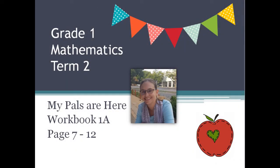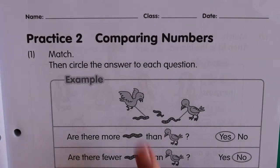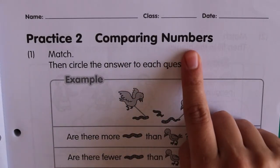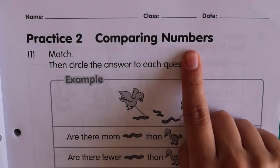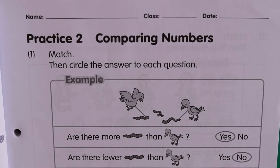We are in our Workbook 1A, carrying on with page 7: comparing numbers. Comparing numbers means looking at the differences — whether they are bigger or smaller. We compare the numbers.